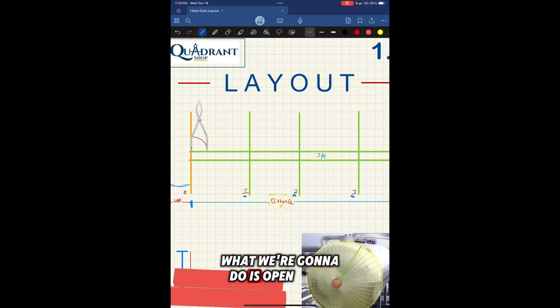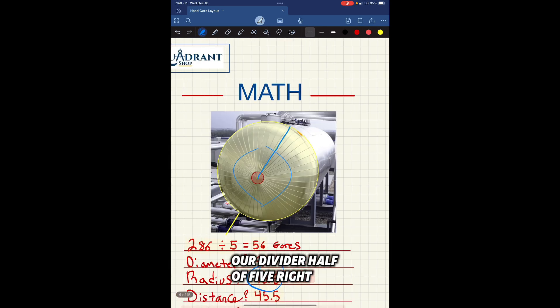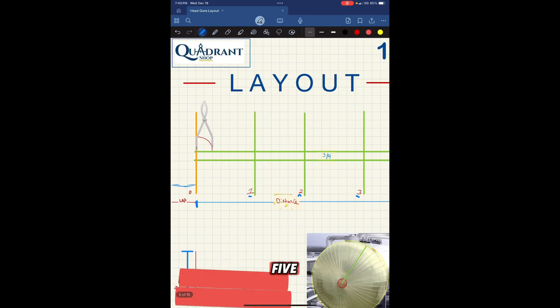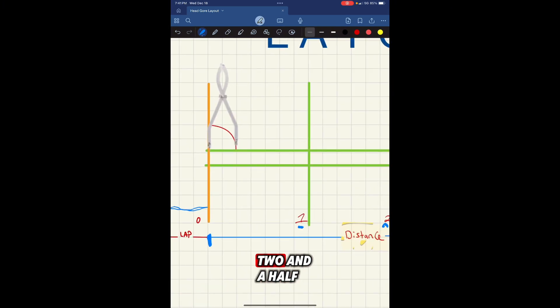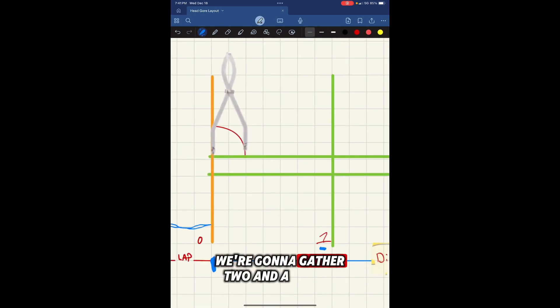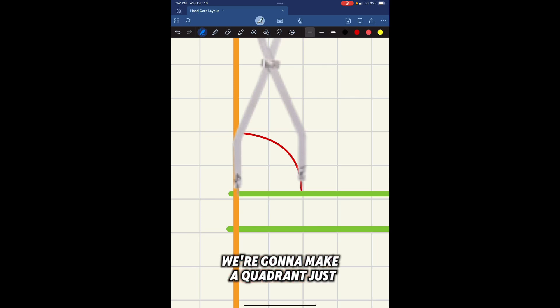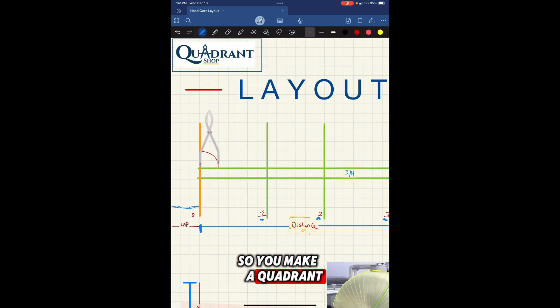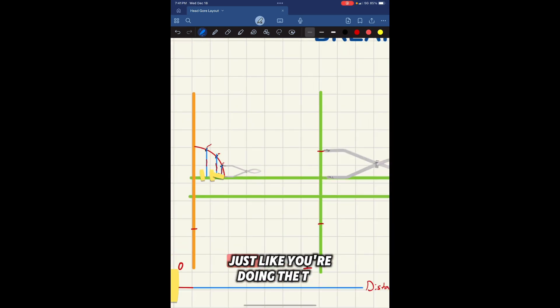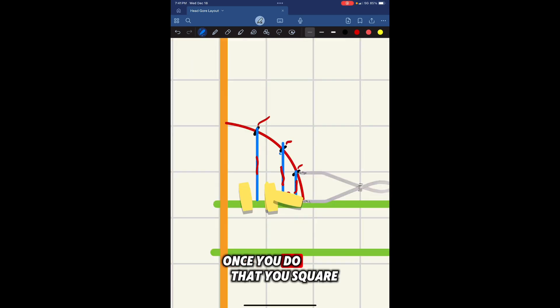Next, what we're going to do is open our divider, half of five. We said that our measurement was five. We're going to get our divider and open the half of five, which is two and a half. We're going to make a quadrant, just like you see in this picture. Just make a quadrant like we're doing in the T. You make a quadrant and you divide the quadrant in four equal parts, just like you're doing in the T. Once you do that, you square your lines and you number your lines.